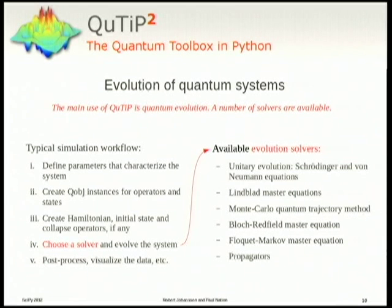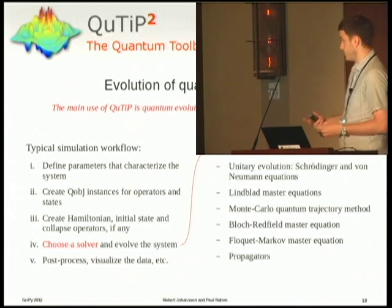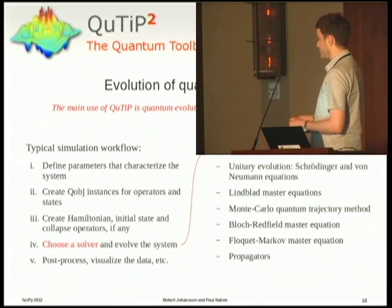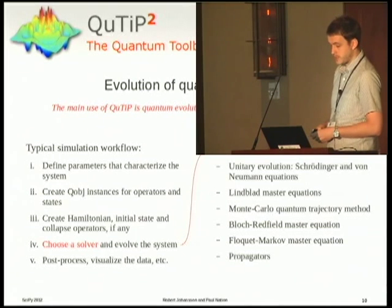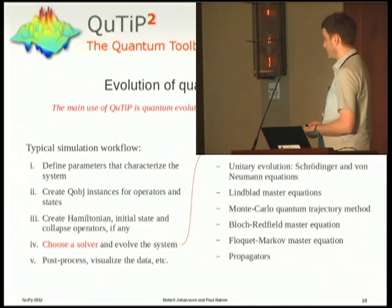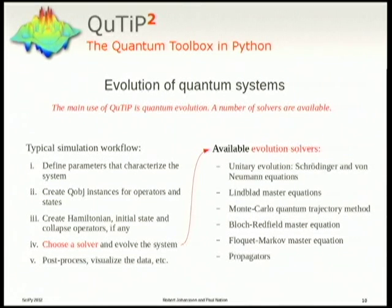For that, there is a large number of evolution solvers. A typical QuTiP calculation would consist of these steps here to the left. We would set up some parameters, define operators and states that define the problem. We would choose a solver suitable for the situation under consideration and evolve the system and then do some post-processing and visualization. And for the solvers, we have unitary solvers, von Neumann equation, there is a Lindblad master equation and a Monte Carlo quantum trajectory evolution and Bloch-Redfield and Floquet-Markov equations to mention a few.